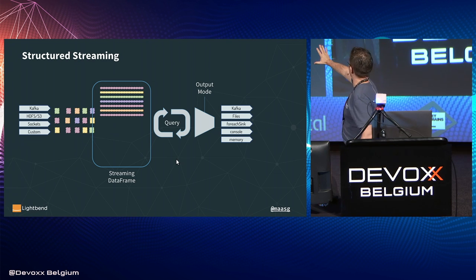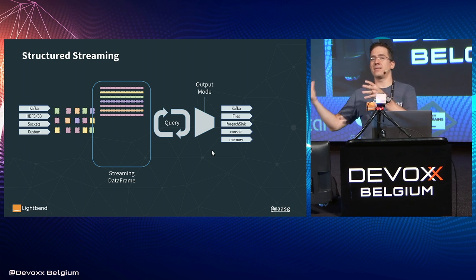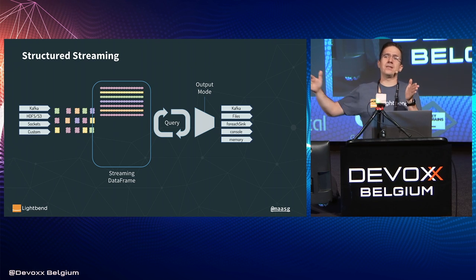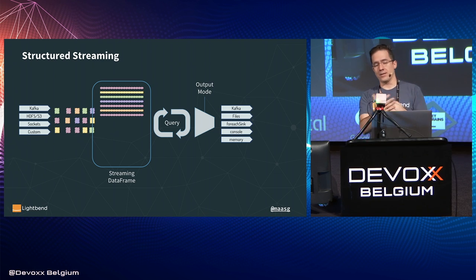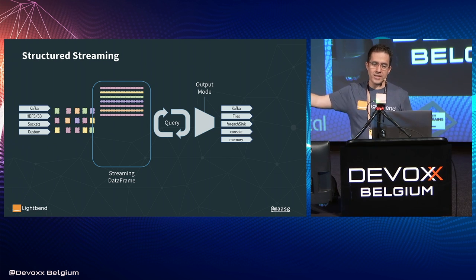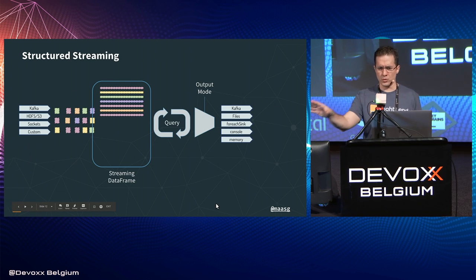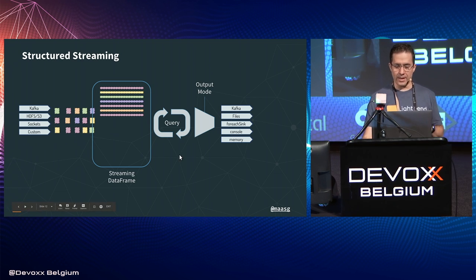At the end, of course, we want data to land somewhere, so there's an output mode. The output mode 'append' means data is written only when a record is completely formed — for example, waiting until the end of a 15-minute aggregation window. 'Update' mode means writing every minute with a running partial result. You can output data back to Kafka, to files, or use programmable facilities to write to any backend. The console and memory sinks are there to help with API exploration.